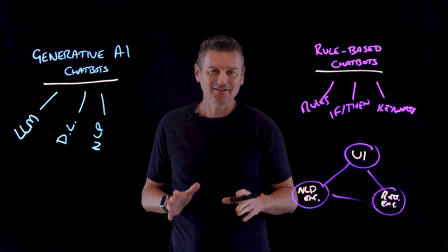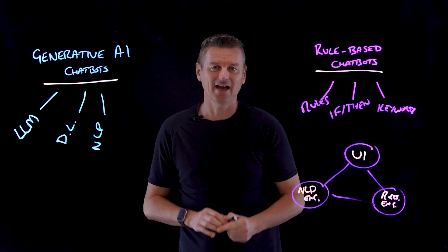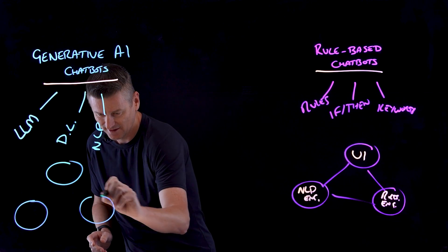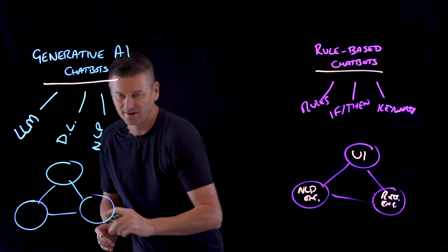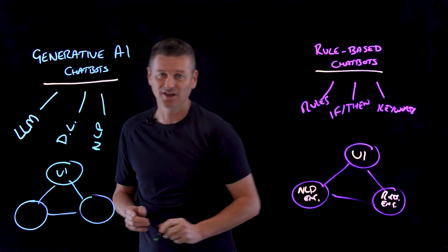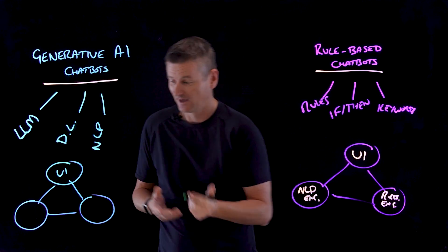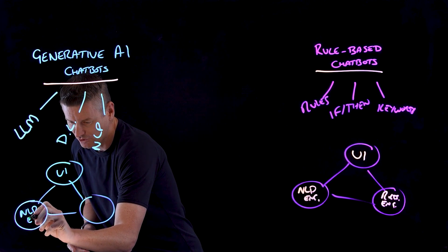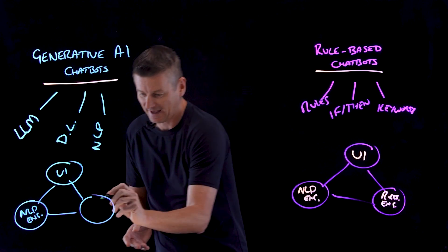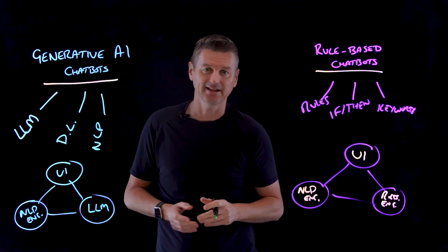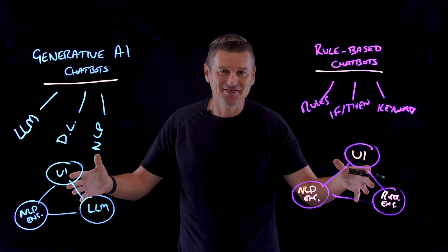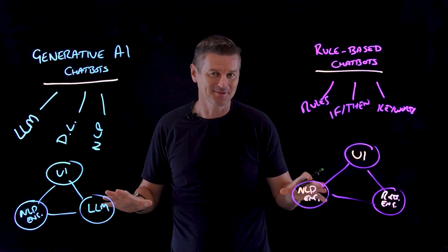At a high level, the architecture for a generative AI chatbot doesn't look so different — we can think of it in three high-level components as well. At the top, again, we have the UI or user interface. We also have an NLP engine. And now, instead of a rules engine, we have a large language model, an LLM. But if you look beneath the surface, there are some fundamental differences between these two.